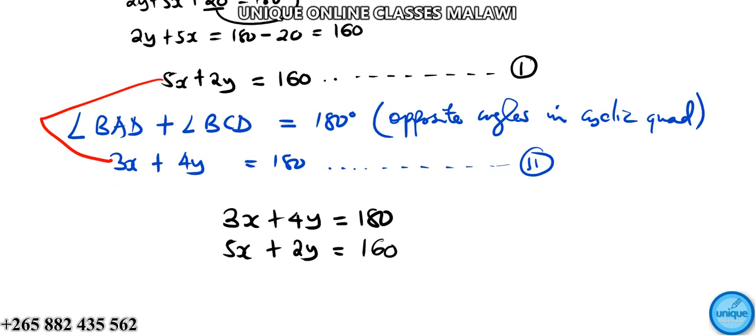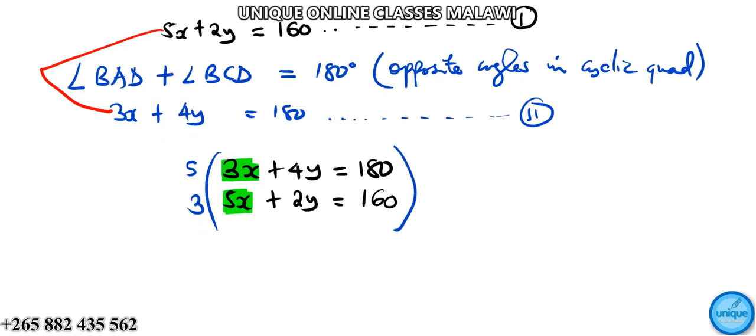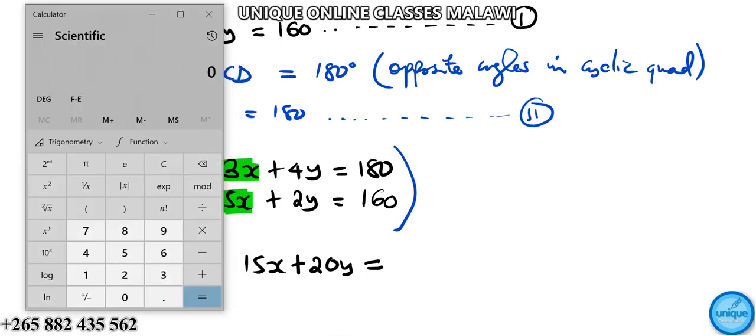To eliminate x, we'll multiply to get a common coefficient. Multiplying the first equation by 5 gives 15x plus 20y equals 900.